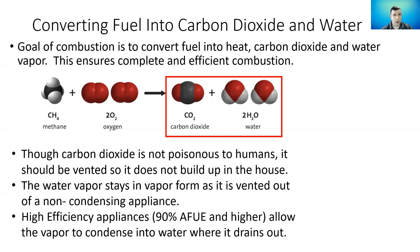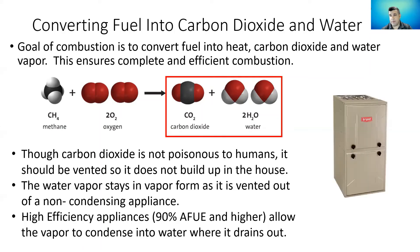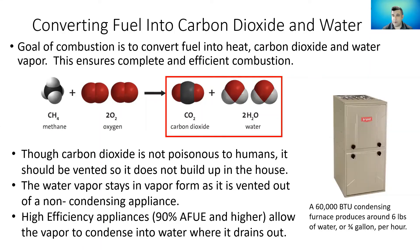To put it in context — how much water vapor we get out of the combustion process — with our 60,000 BTU condensing furnace, the combustion process produces about three-quarters of a gallon, or six pounds, of water per hour of runtime. It's a tremendous amount of water vapor produced when we burn fuel. That's why we have to drain it out.